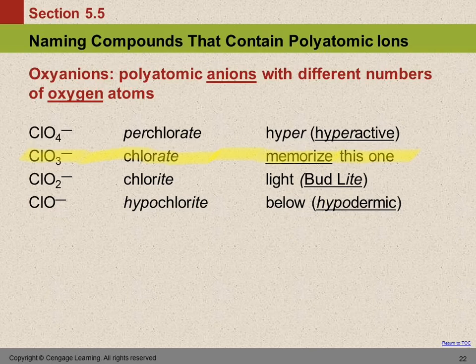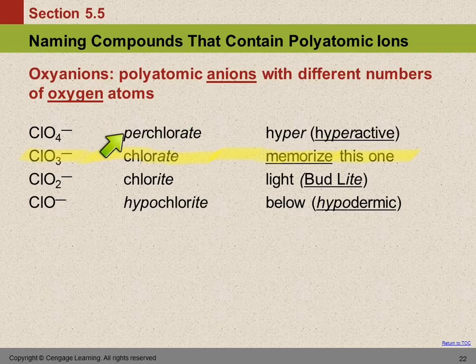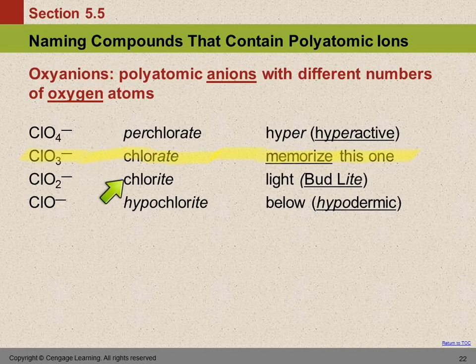If someone has extra energy, we say they are hyper. So here's chlorate ion, and perchlorate has the per- prefix — like in hyper. The per-whatever-ate has extra oxygen. Just like a hyperactive child has extra activity. Going from chlorate (ClO3) to perchlorate (ClO4) adds one oxygen. They all have one chlorine and one negative charge — the only difference is the number of oxygens: 4, 3, 2, and 1.